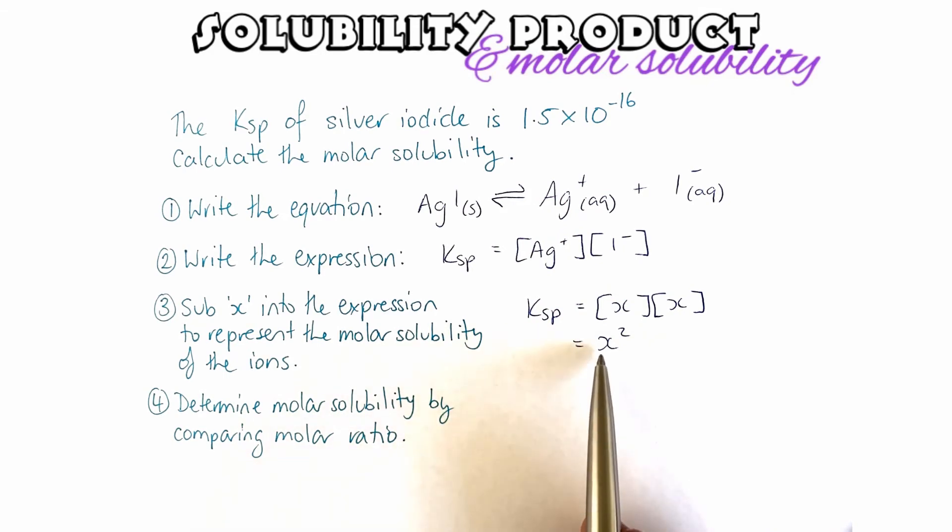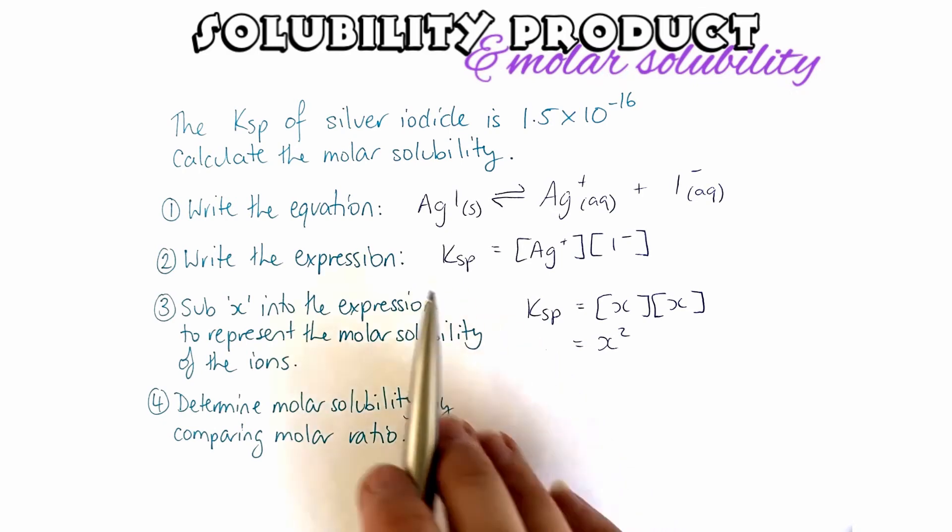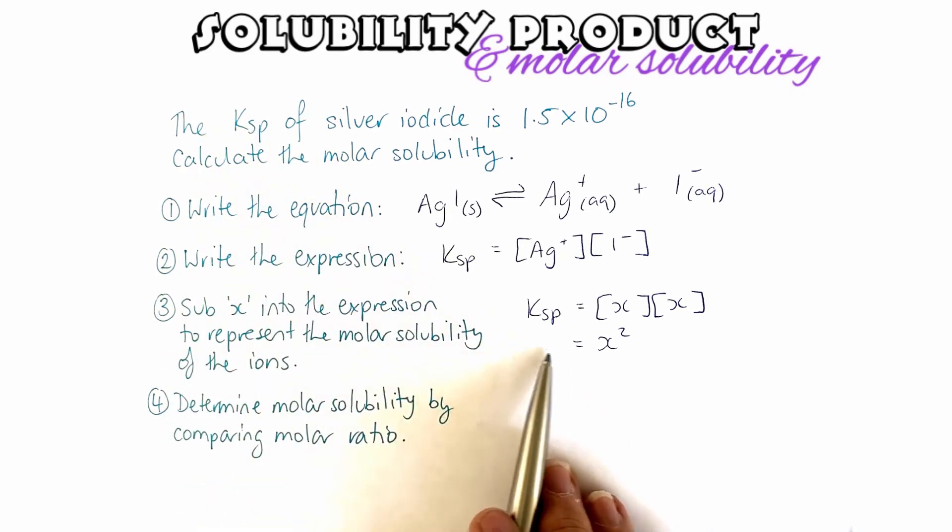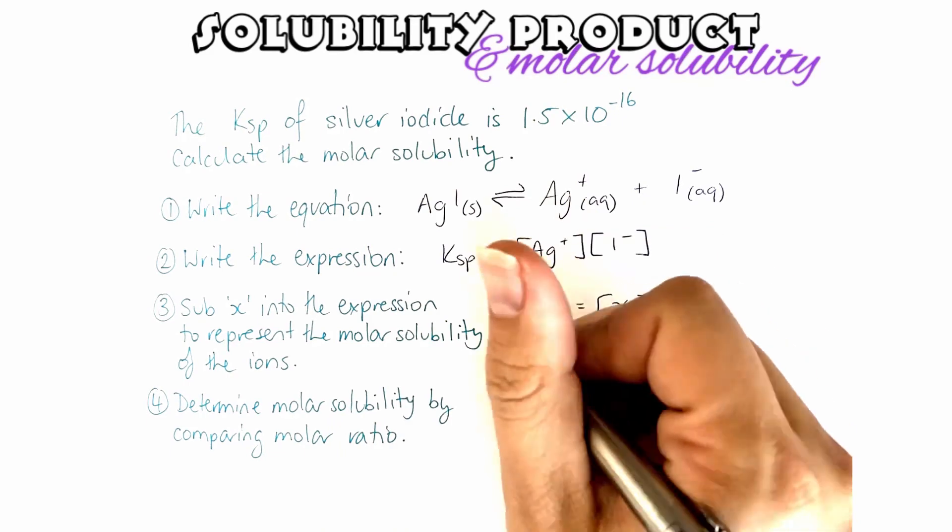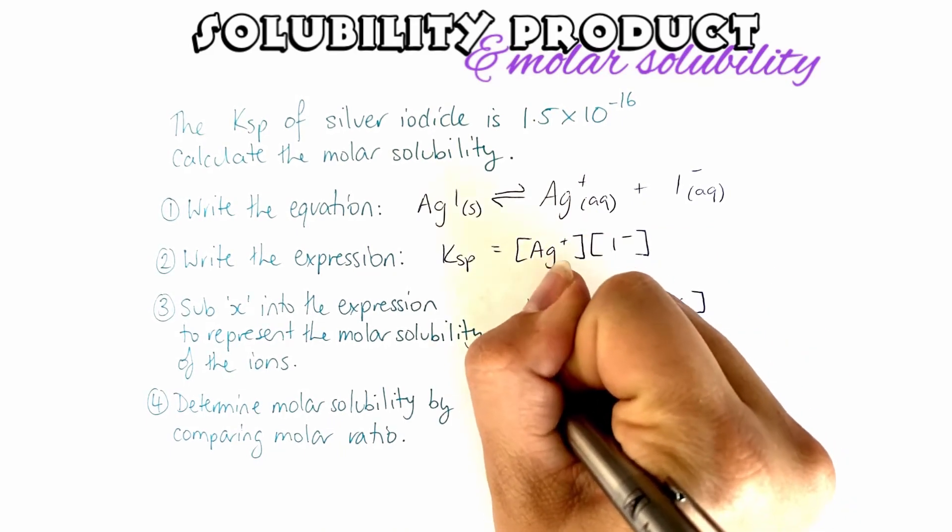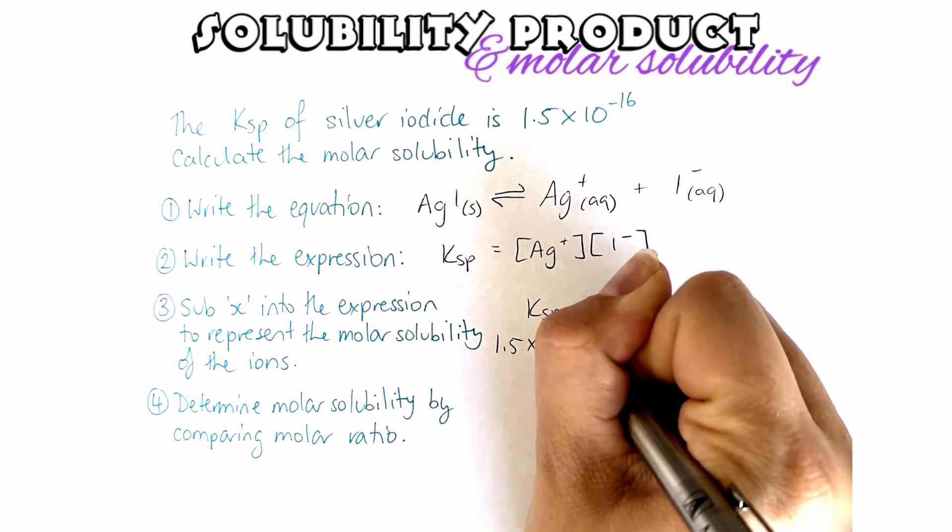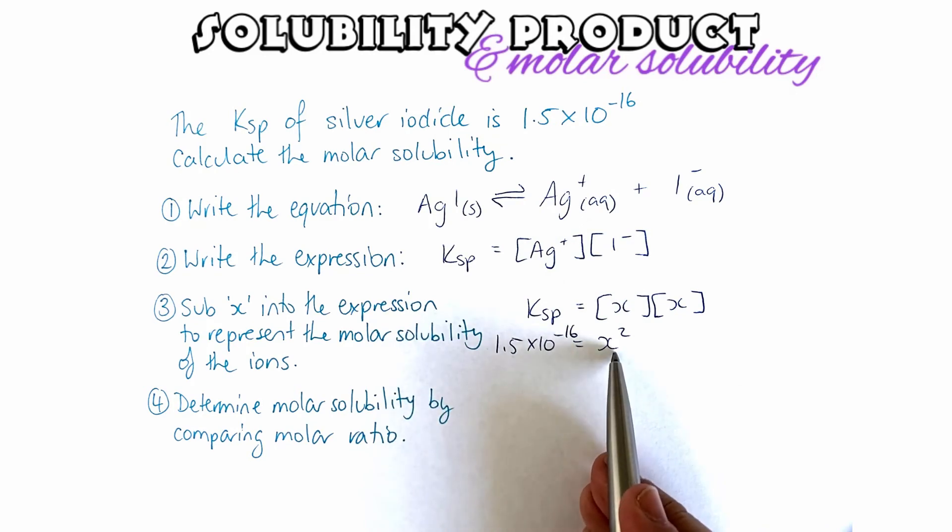So now what I'm going to do, we're actually given the Ksp, so I can substitute the value of the Ksp in here too. So Ksp is 1.5 times 10 to the minus 16 equals x squared, and I'm going to solve this for x.